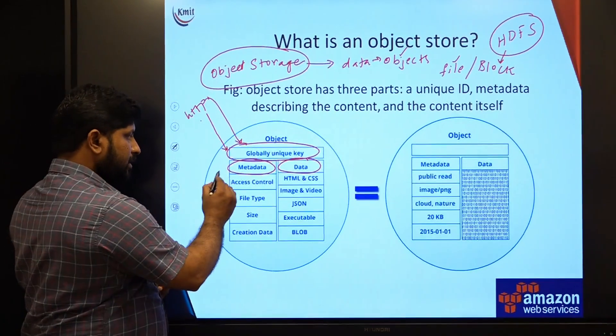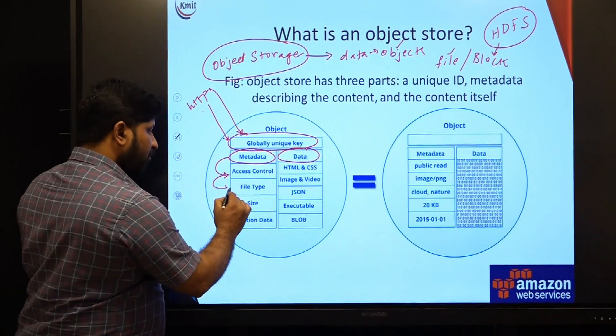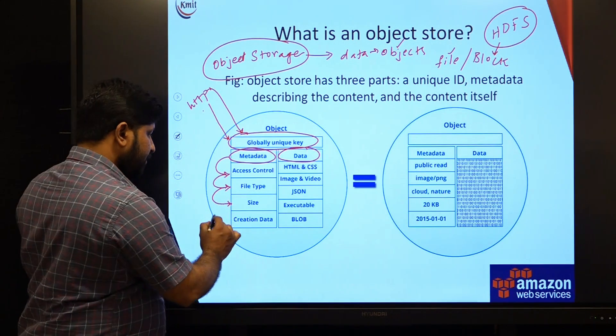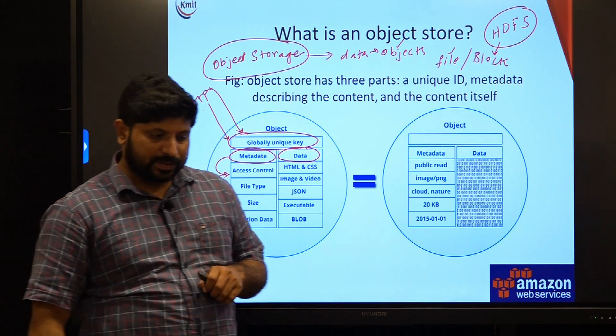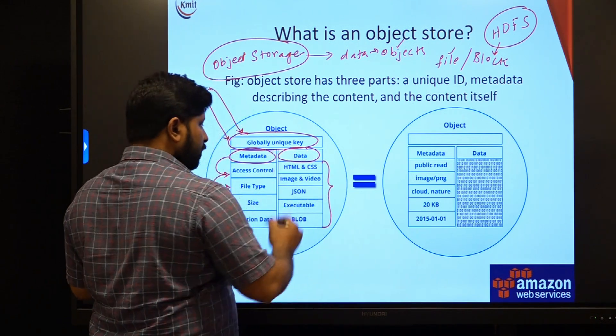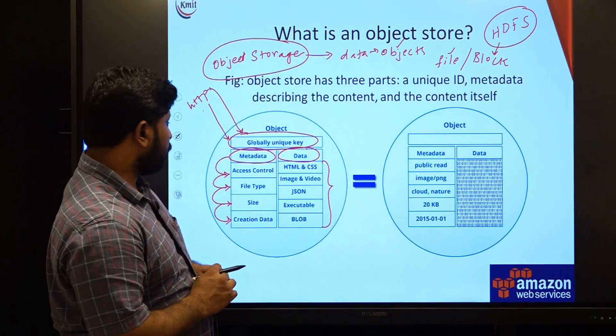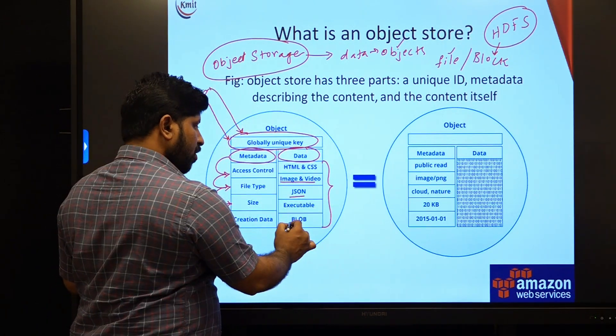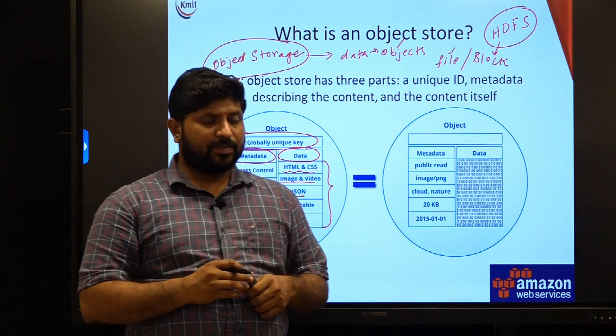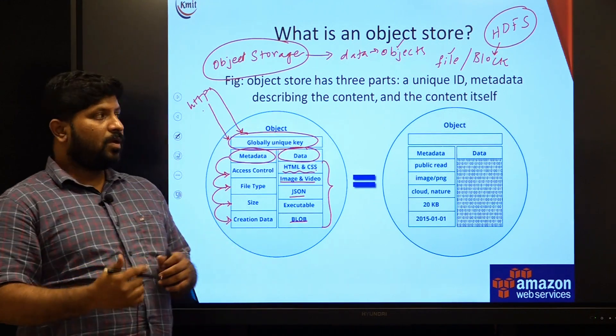Coming to metadata, it handles who can have access to this particular object, what type of file it is, what is the size of the file, and when it has been created. All these are the contents which will be handled under metadata. When coming to the data itself, you can store any type of data. As it is highly unstructured data, you can store either images or video, either JSON format or blob format, or any text documents such as HTML or CSS. You can store the codes, everything which can be shared. It can be used just like a Google drive.